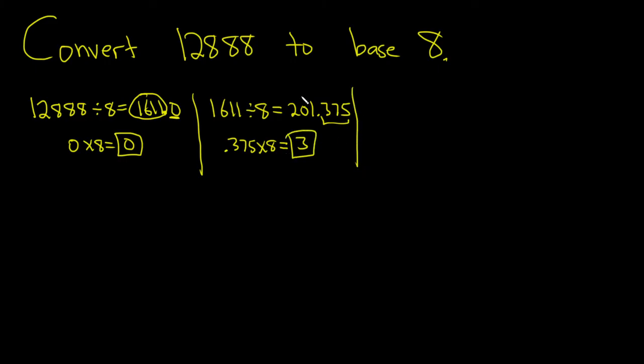Then you do it again. You take the whole number part, and you divide by 8. And you keep doing this until the whole number part is 0. That's how you know when to stop. So divide by 8. So 201 divide it by 8.